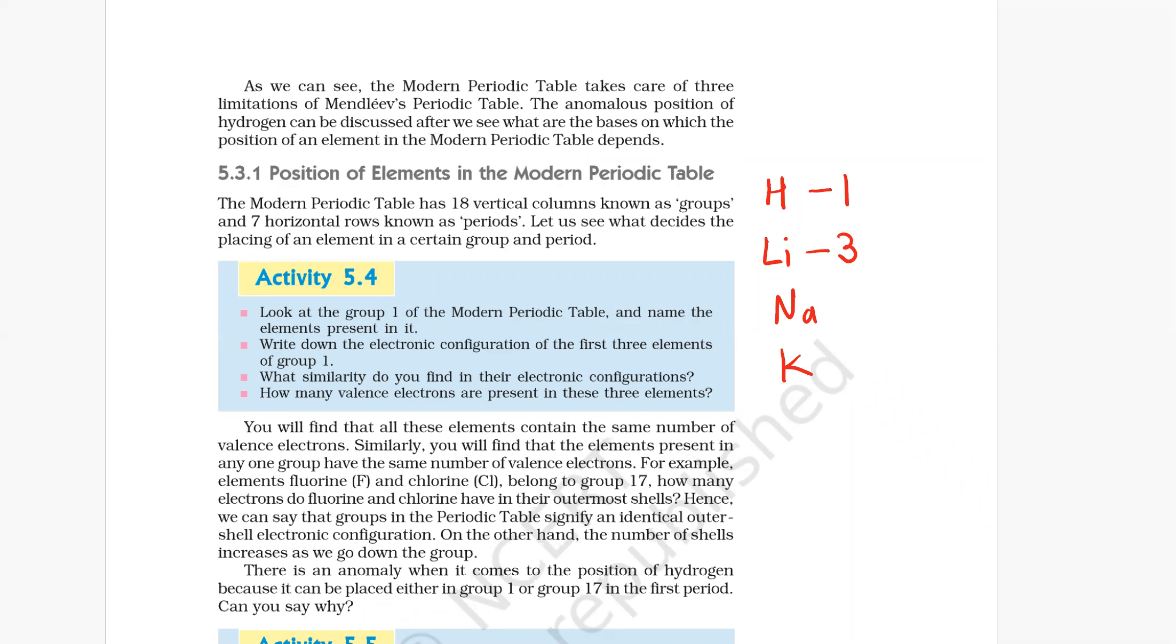Sodium, its atomic number is 11, and potassium has 19. Write down the electronic configuration of the first three elements of group one. So we have to write only the first three.